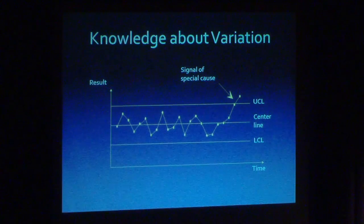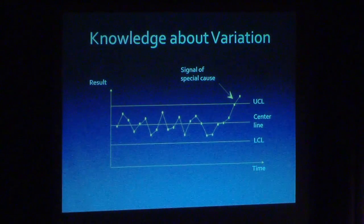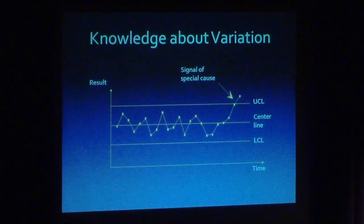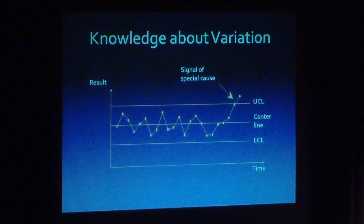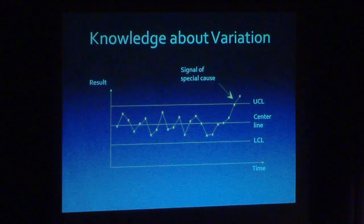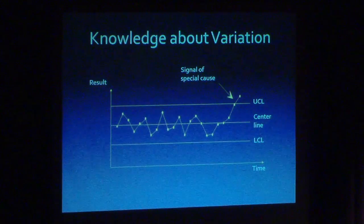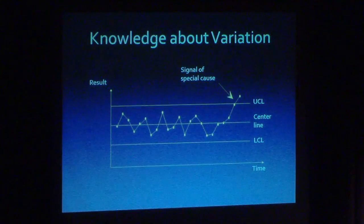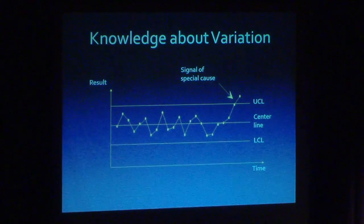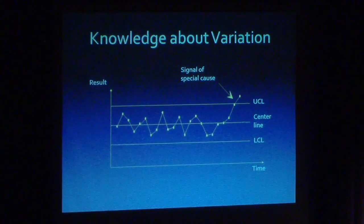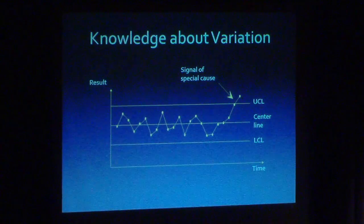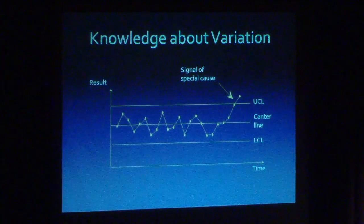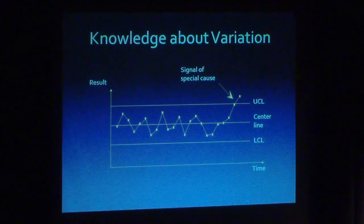The purpose of the control chart is to be able to distinguish between different kinds of variation. In the absence of a tool like this, what we're tempted to do is to explain all forms of variation.